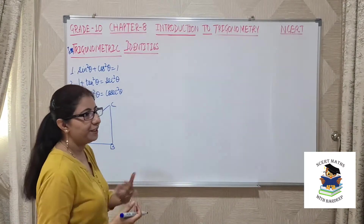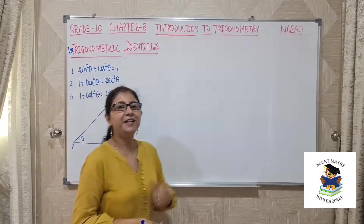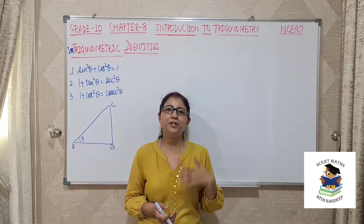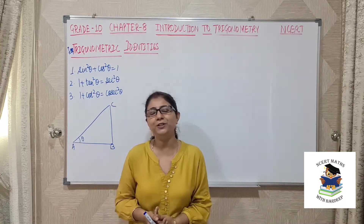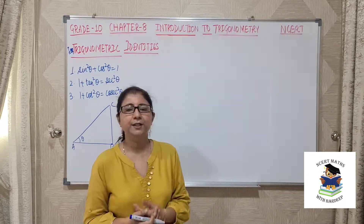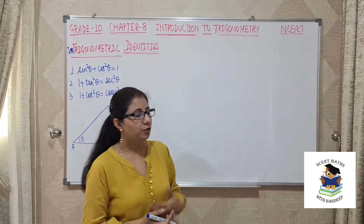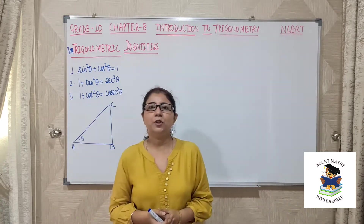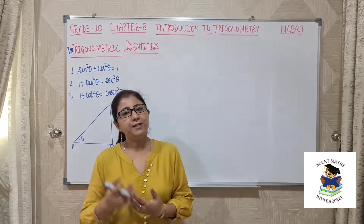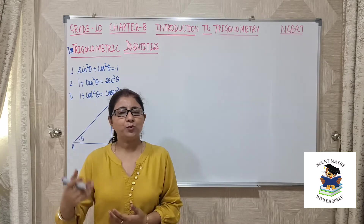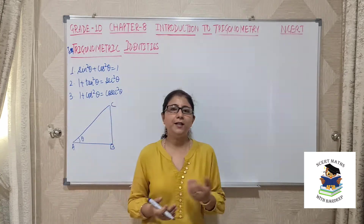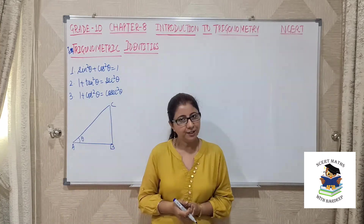So first of all, what is an identity? Any equation is called an identity if it is true for all the values of the variable involved. We have done this in previous grades also, like (a + b)² is always equal to a² + b² + 2ab for any value of a and b.